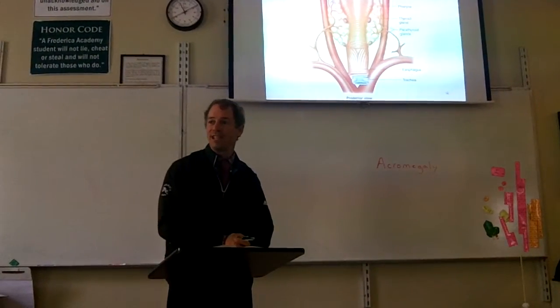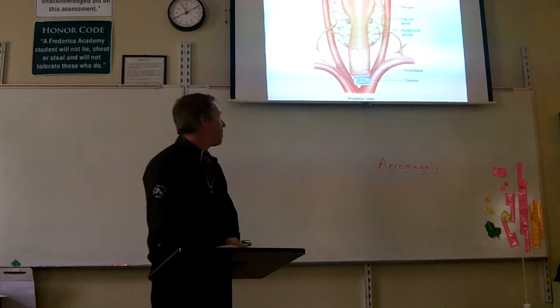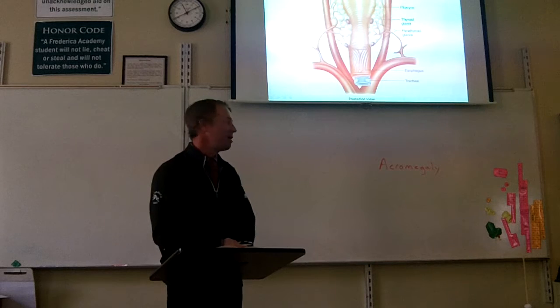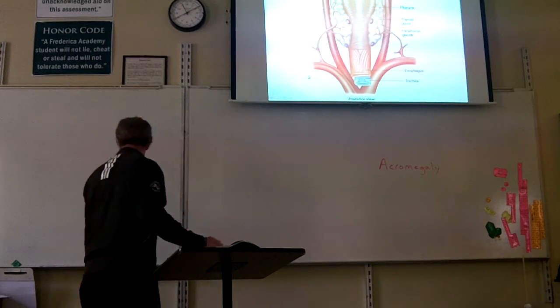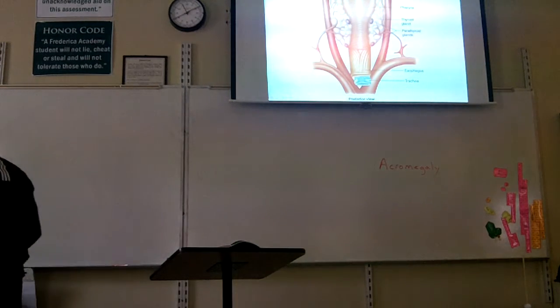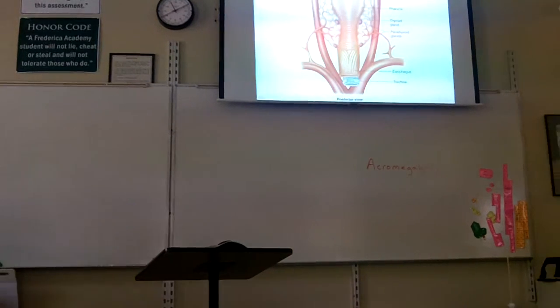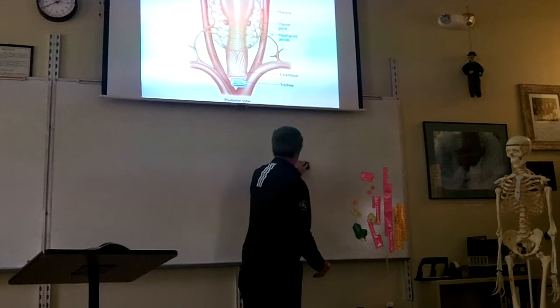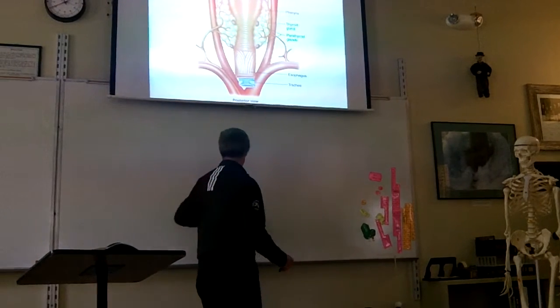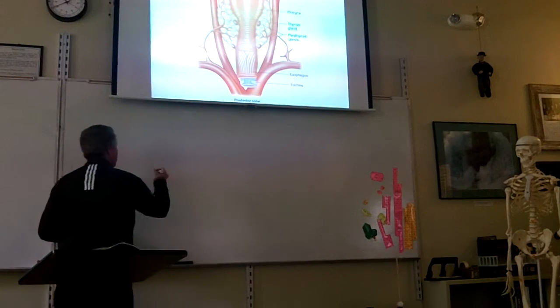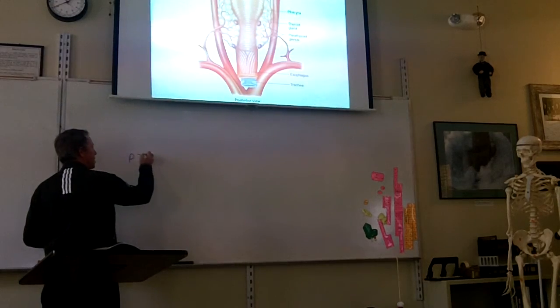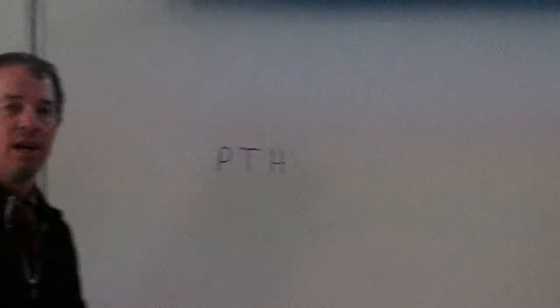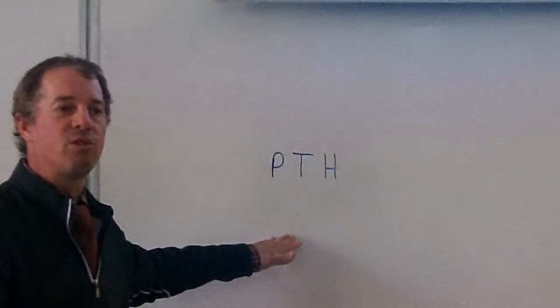This is the thyroid gland here, and on the back of the thyroid gland are these four little dots. They're the parathyroid glands. And they emit what hormone? Do you remember? Parathyroid hormone. It's the easiest one. And parathyroid hormone releases a hormone called what?